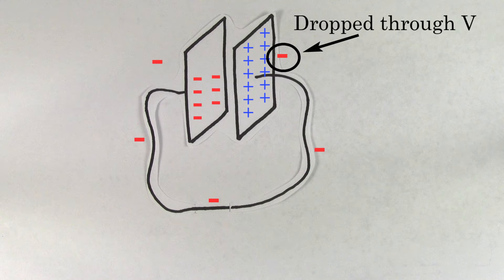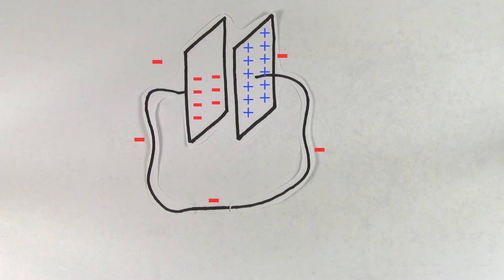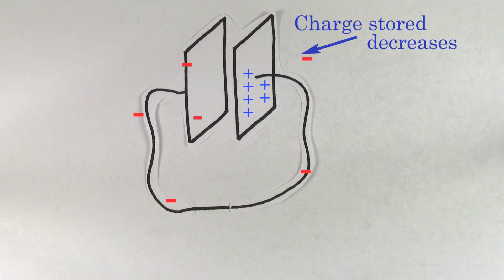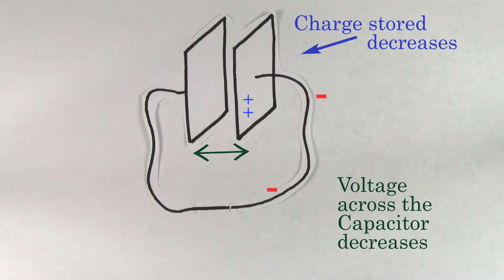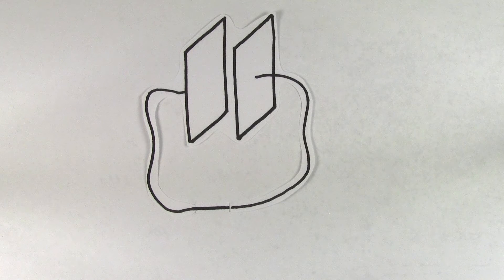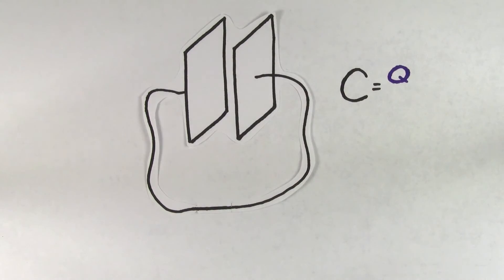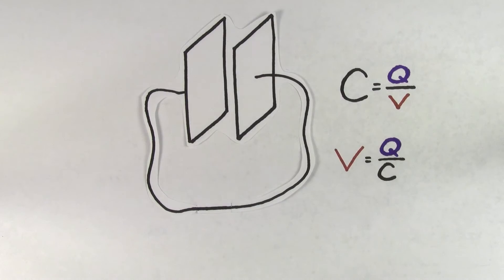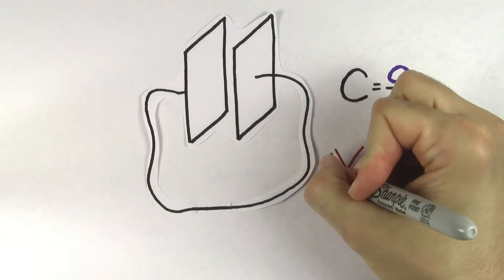All of the charges that get transferred after that are going to drop through less and less voltage. The reason for this is that each time a charge gets transferred, it decreases the total amount of charge stored on the capacitor. And as the charge on the capacitor keeps decreasing, the voltage of the capacitor keeps decreasing. Remember that capacitance is defined to be the charge stored on a capacitor divided by the voltage across that capacitor, so as the charge goes down, the voltage goes down.